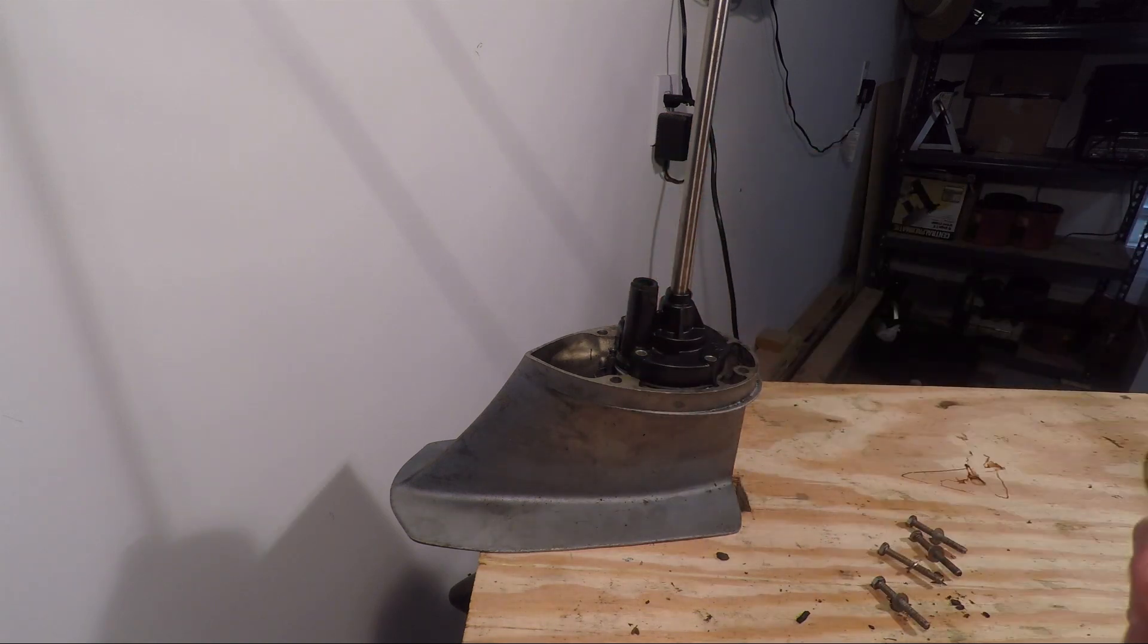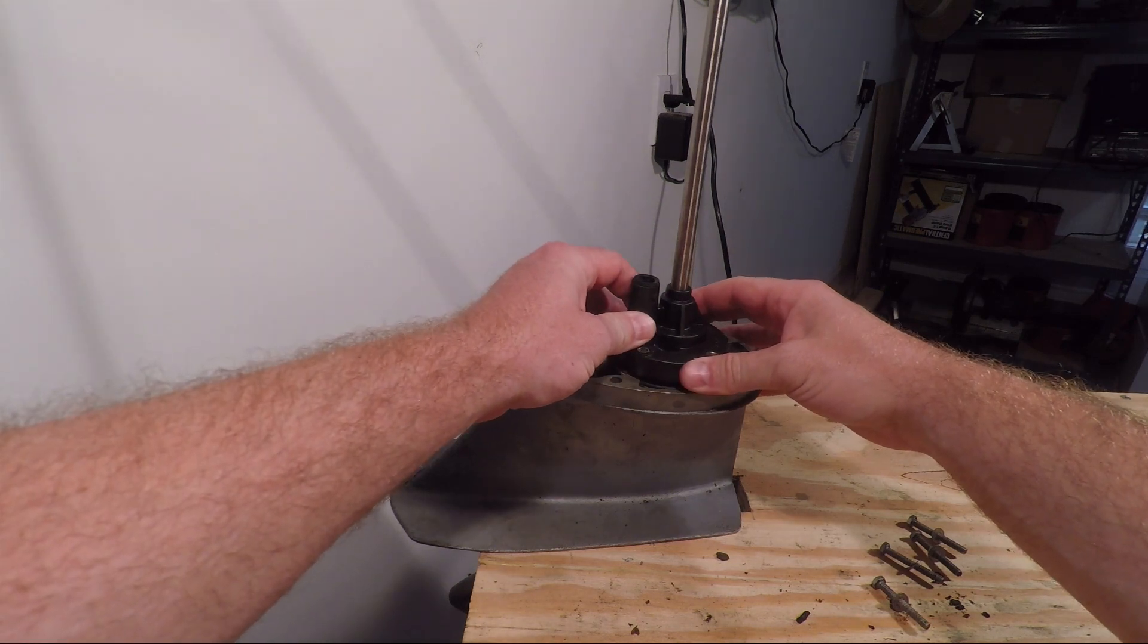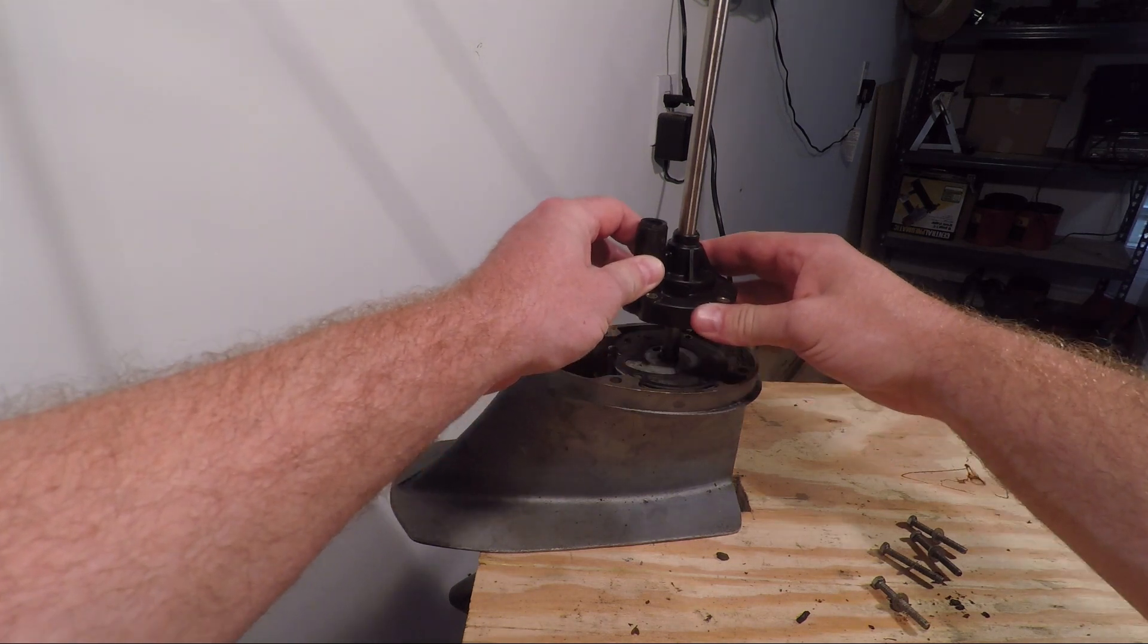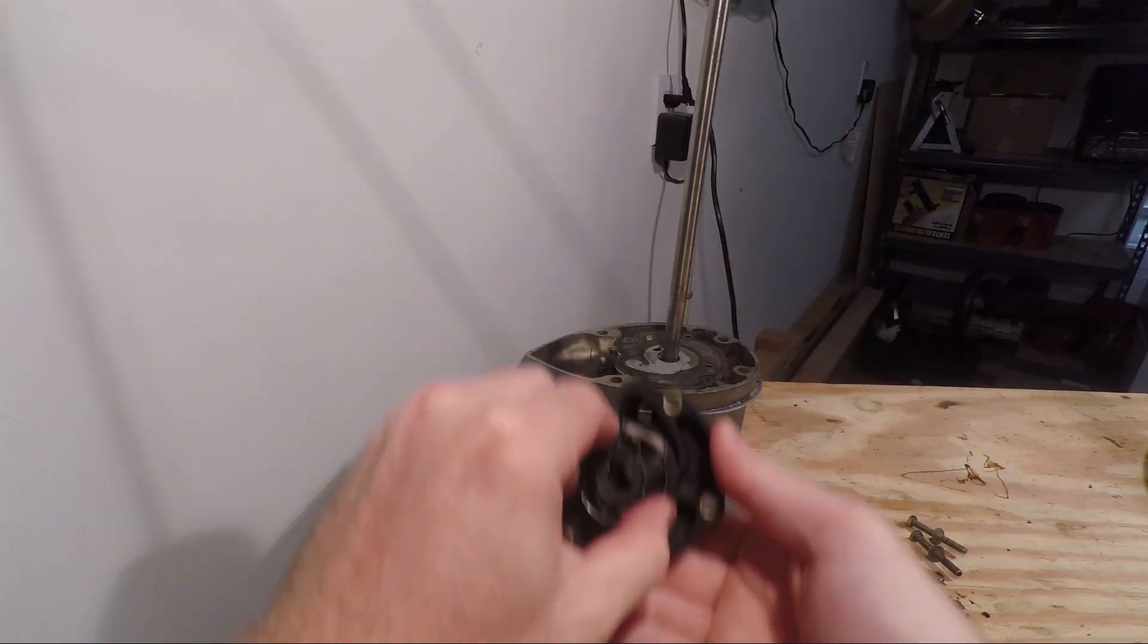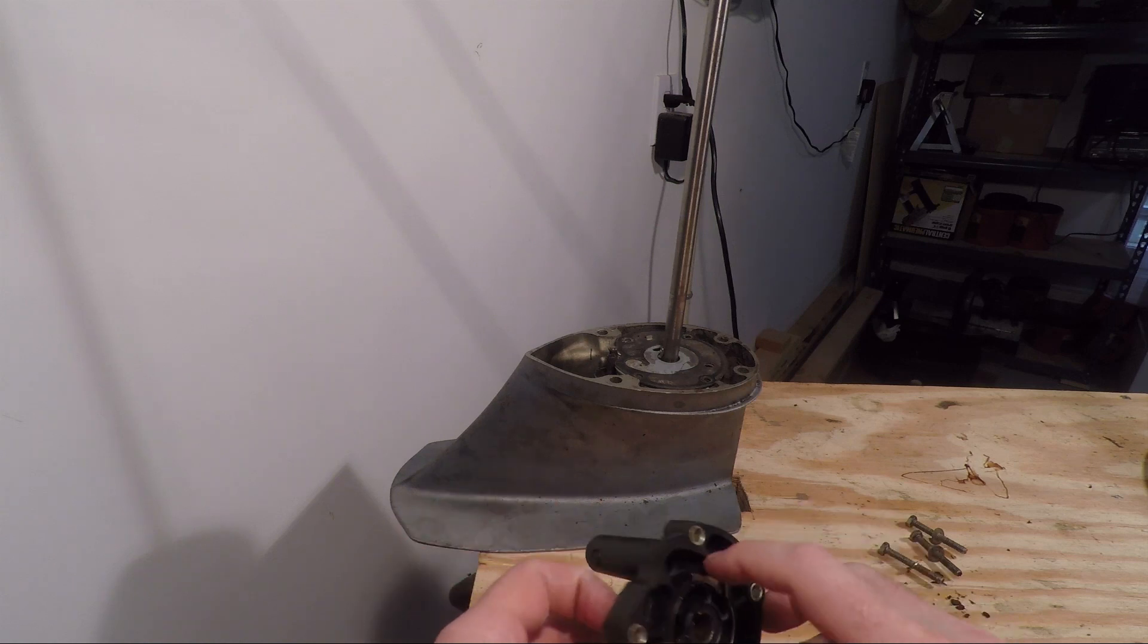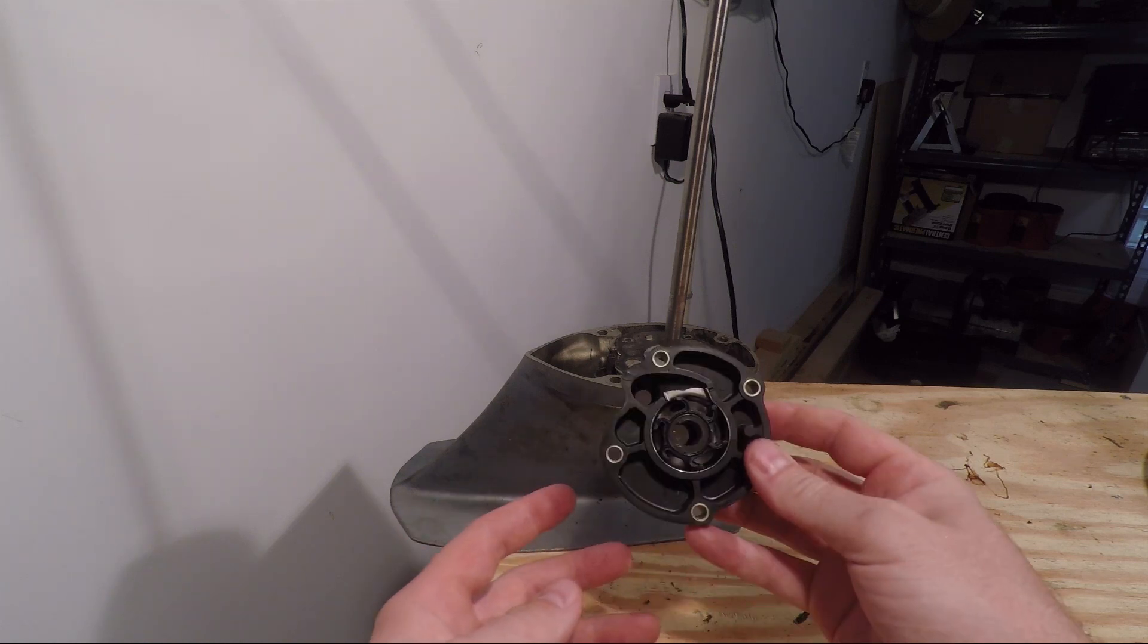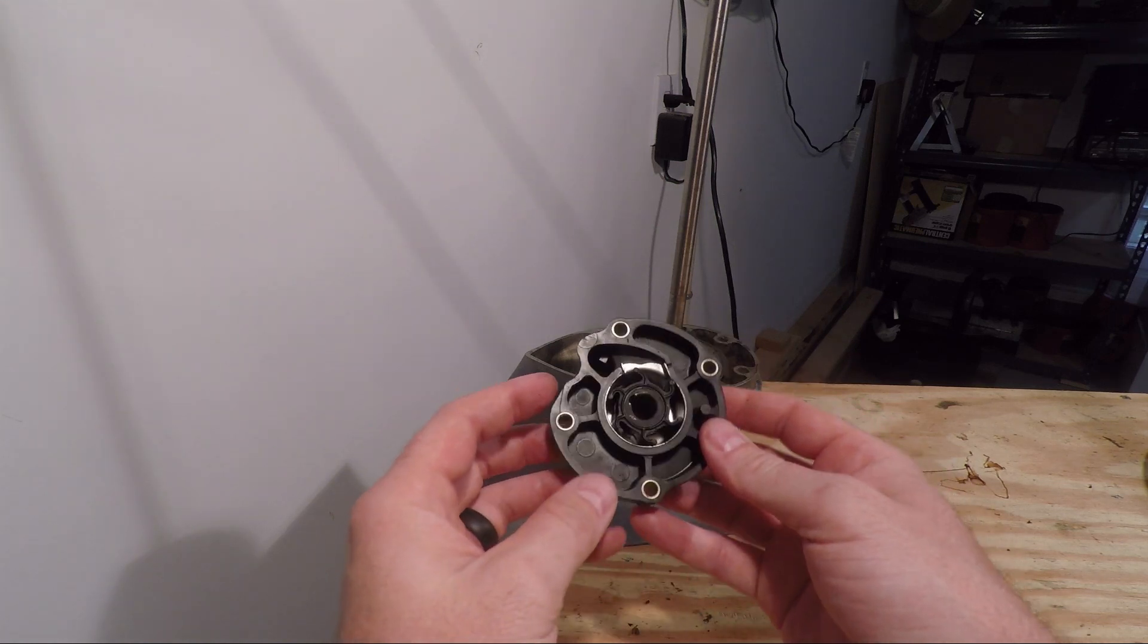Once you have the four screws removed you can simply lift up. You may have to twist a little bit. Lift it up over the top of the drive shaft and your impeller housing should come off looking something like this.